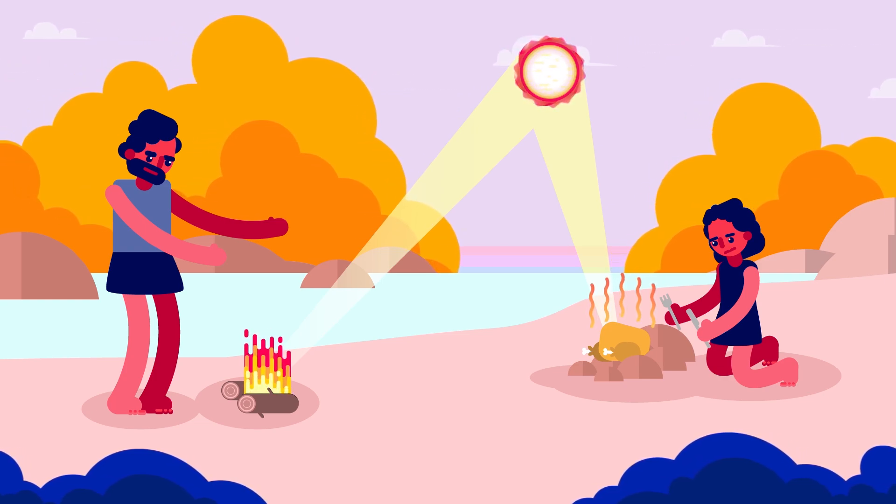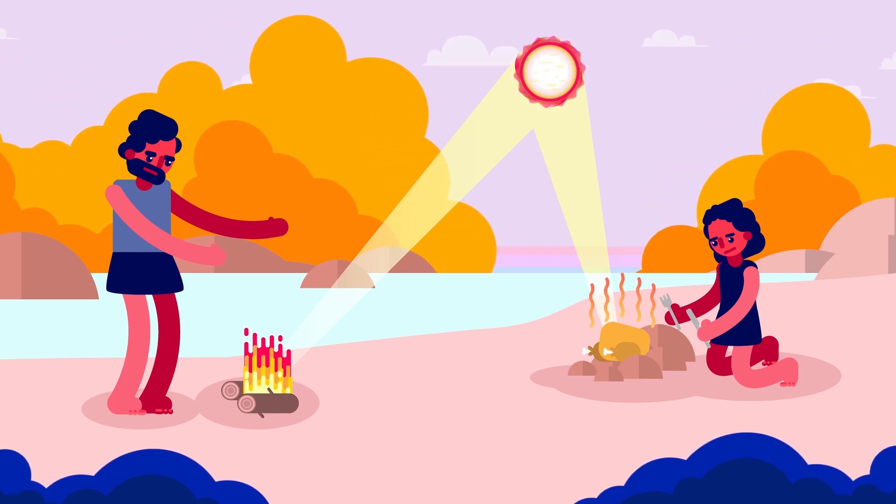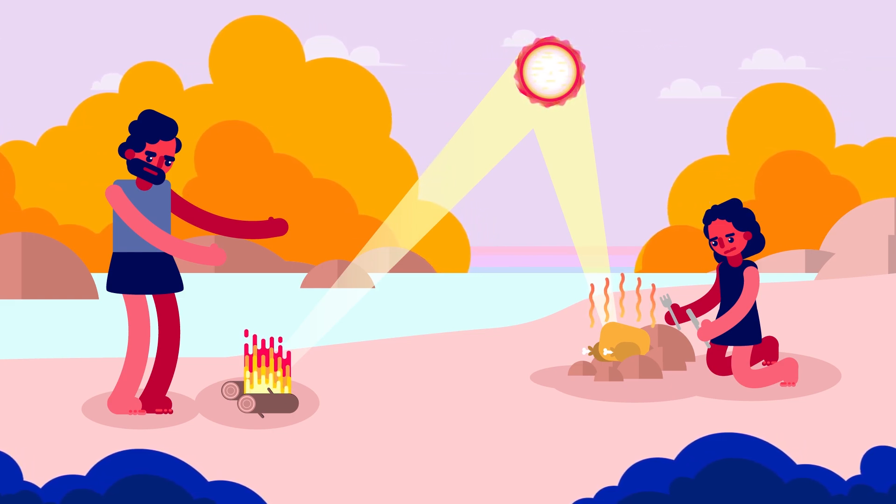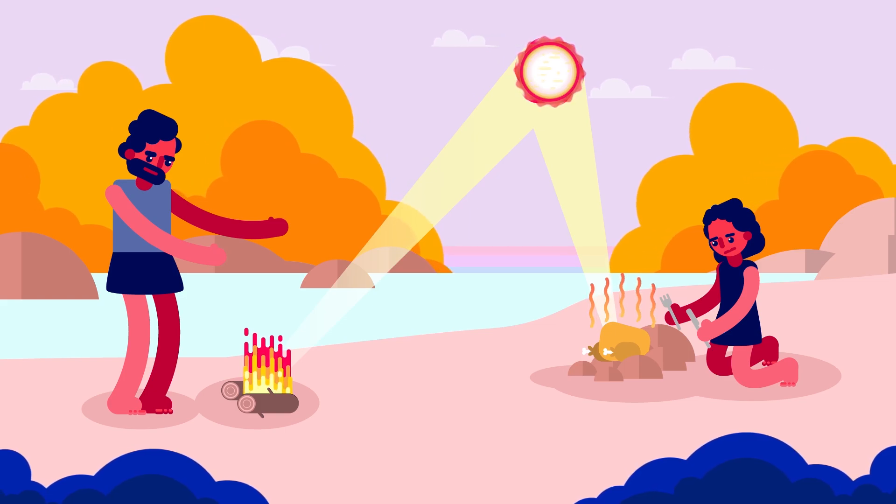Long ago, people figured out how to use a piece of glass to bend and magnify sunlight to start campfires to keep them warm and cook their food.